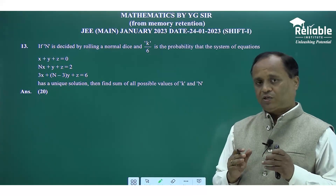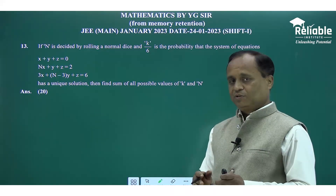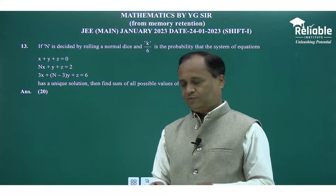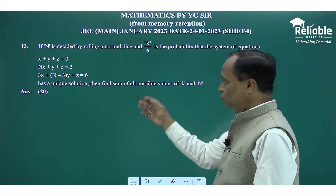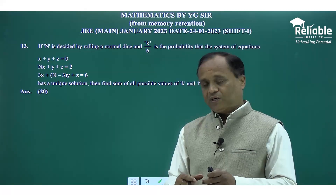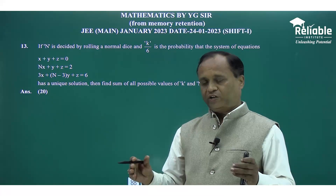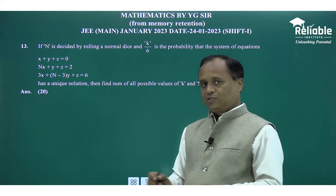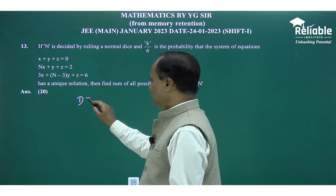Question number 13: n is decided by rolling a normal die, so the possible values of n are 1, 2, 3, 4, 5, 6. k/6 is the probability that the system of three given equations has a unique solution. For a unique solution, the condition is that determinant D ≠ 0. We set up the determinant with n and check when D ≠ 0.